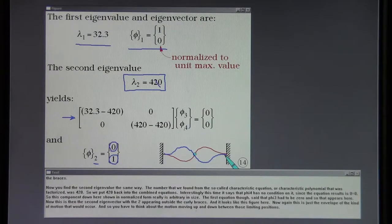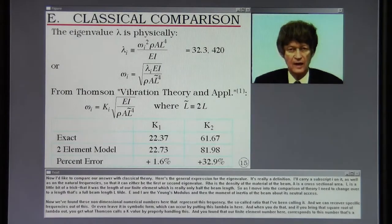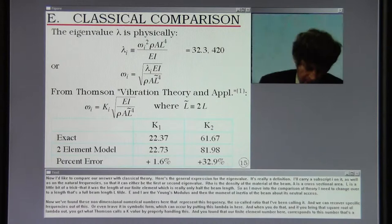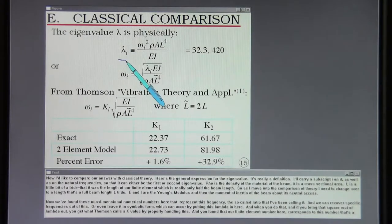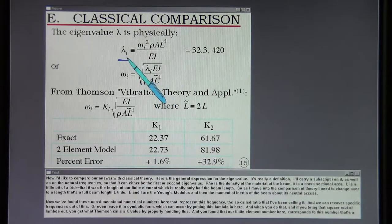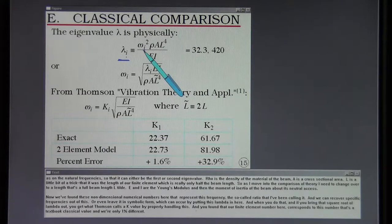You have to think about the motion moving up and down between those limiting positions. Now I'd like to compare our answer with classical theory. Here's the general expression for the eigenvalue. It's really a definition. I'll carry a subscript i on it as well as on the natural frequency so that it can either be the first or second eigenvalue.